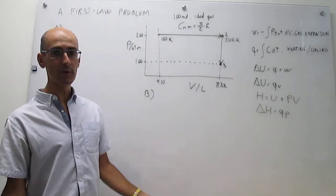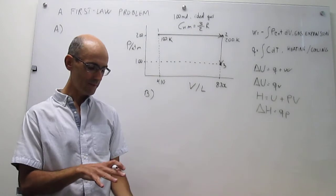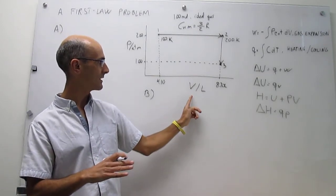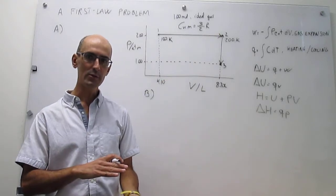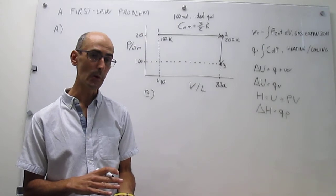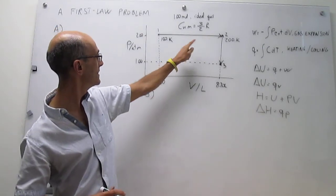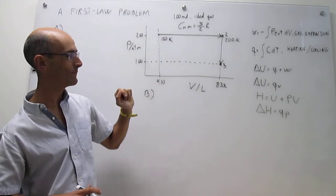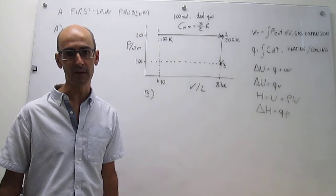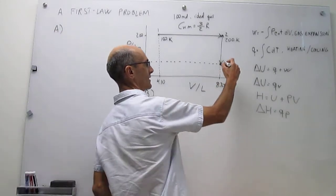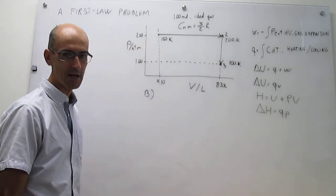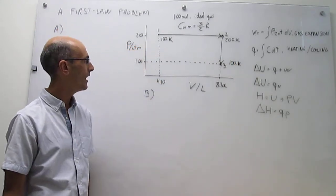Following the same rationale, from two to three the volume is not changing — the x-axis stays constant — but the pressure is decreasing, and that can only happen if the gas is cooling down. The pressure halves from two atmospheres to one atmosphere, so if the volume is constant, the temperature must be divided by a factor of two, giving T3 = 100 Kelvin. With the temperatures now known, we are ready to solve the whole problem.